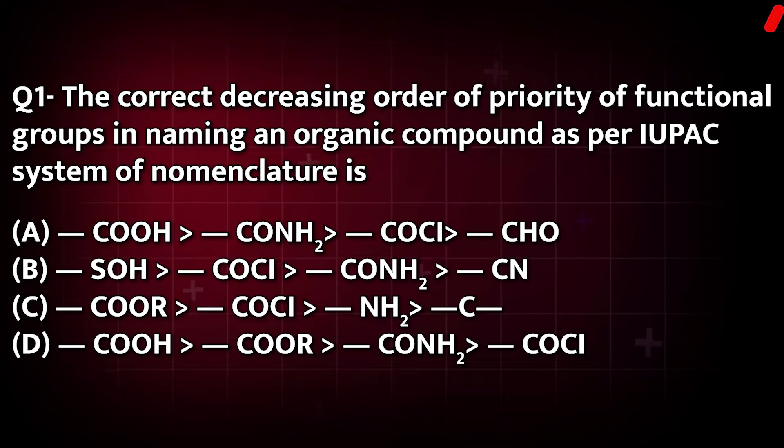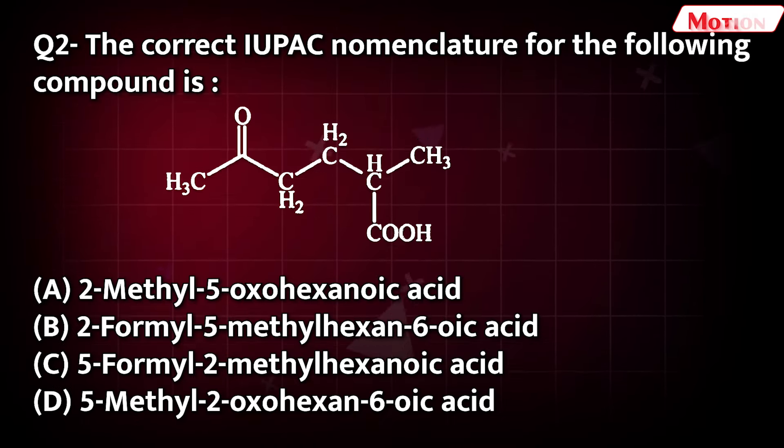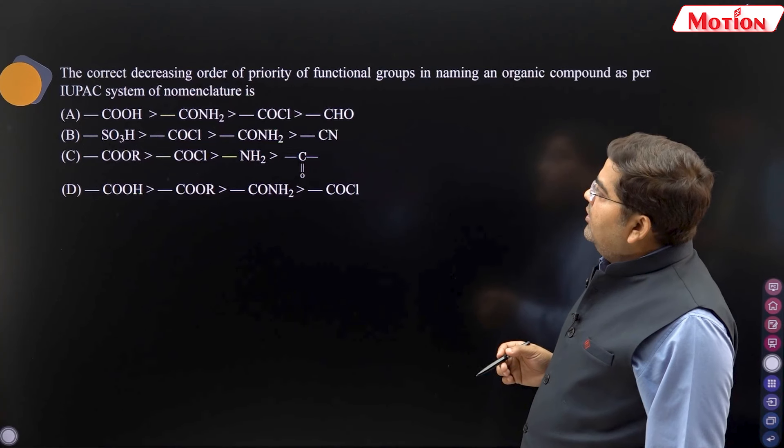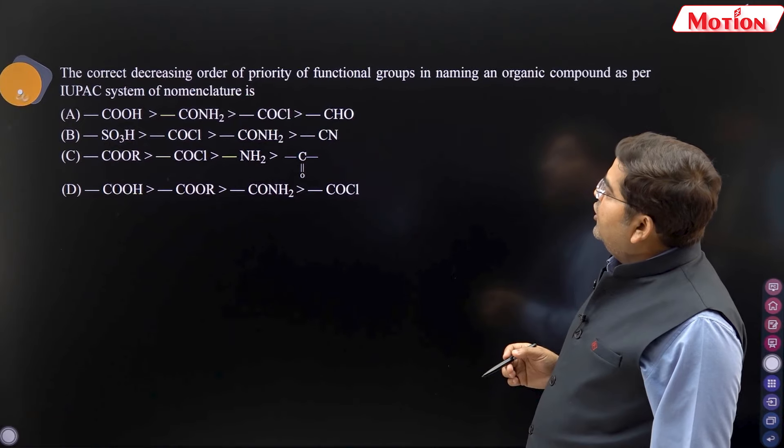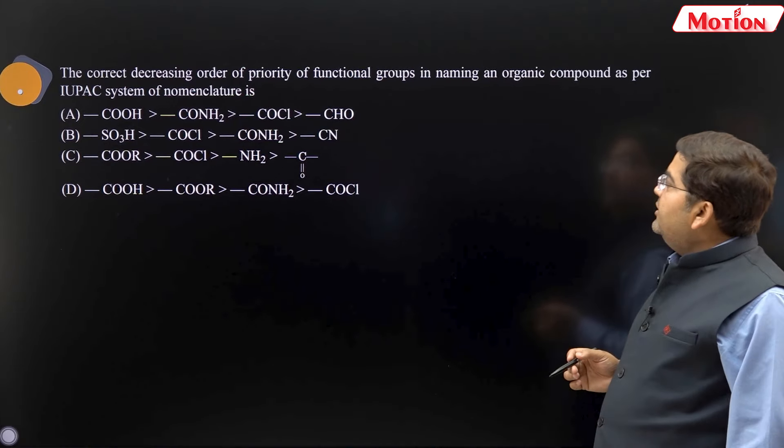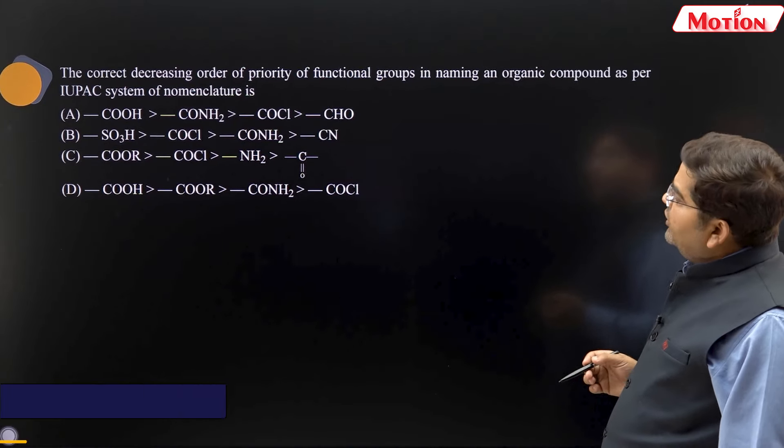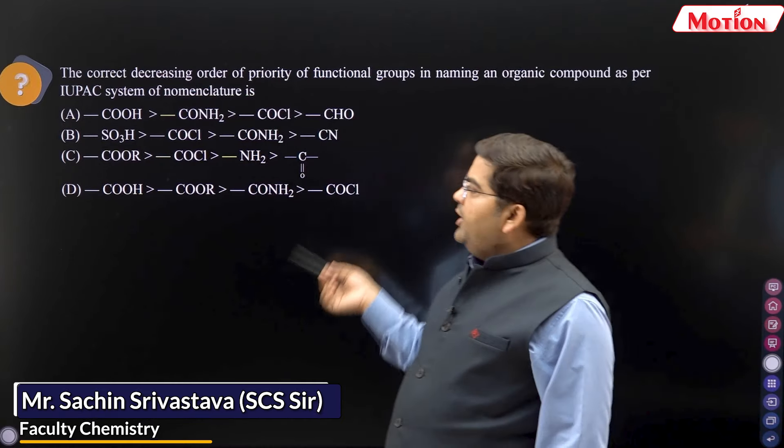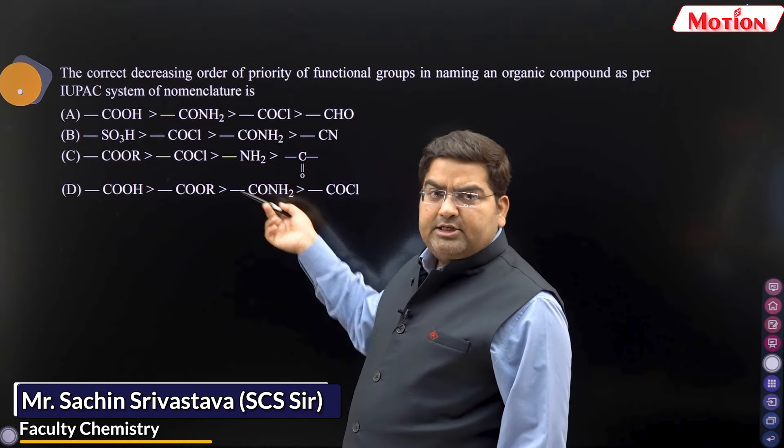Decreasing order of priority of functional groups in naming an organic compound as per IUPAC system of nomenclature. So, what is priority? Here you can understand the priority list.